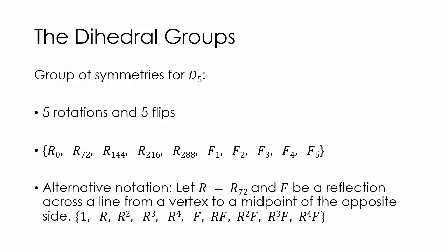Well, we can kind of give these things different names. So instead of R sub 72, we can just call that R and then F can just be a reflection across a line from a vertex to a midpoint. It doesn't matter that we're specific about which F it is. And if we do that, then we see that instead of R sub zero, we can just call that one. And then R 72 becomes R. R 144 is just R squared, R cubed, R to the fourth. F sub one just becomes F. F two is just an R and an F, remember? Because all of these flips are the same thing as rotations and flips. And then we have an R squared F, R cubed F, R to the fourth F. And by doing this, we start to see, hey, these letters, these notations are starting to look like polynomials.